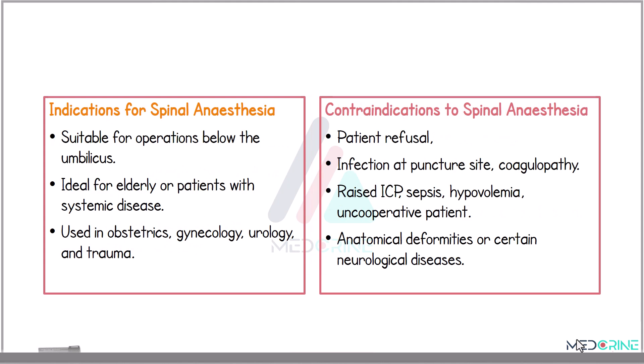Spinal anesthesia is particularly suitable for surgeries below the umbilicus and is ideal for elderly patients or those with significant comorbidities. Common applications include obstetric surgeries especially caesarean section, gynecological surgeries, urological and trauma surgeries involving the lower body. Absolute contraindications include patient refusal, infection at the puncture site, and a coagulation disorder.